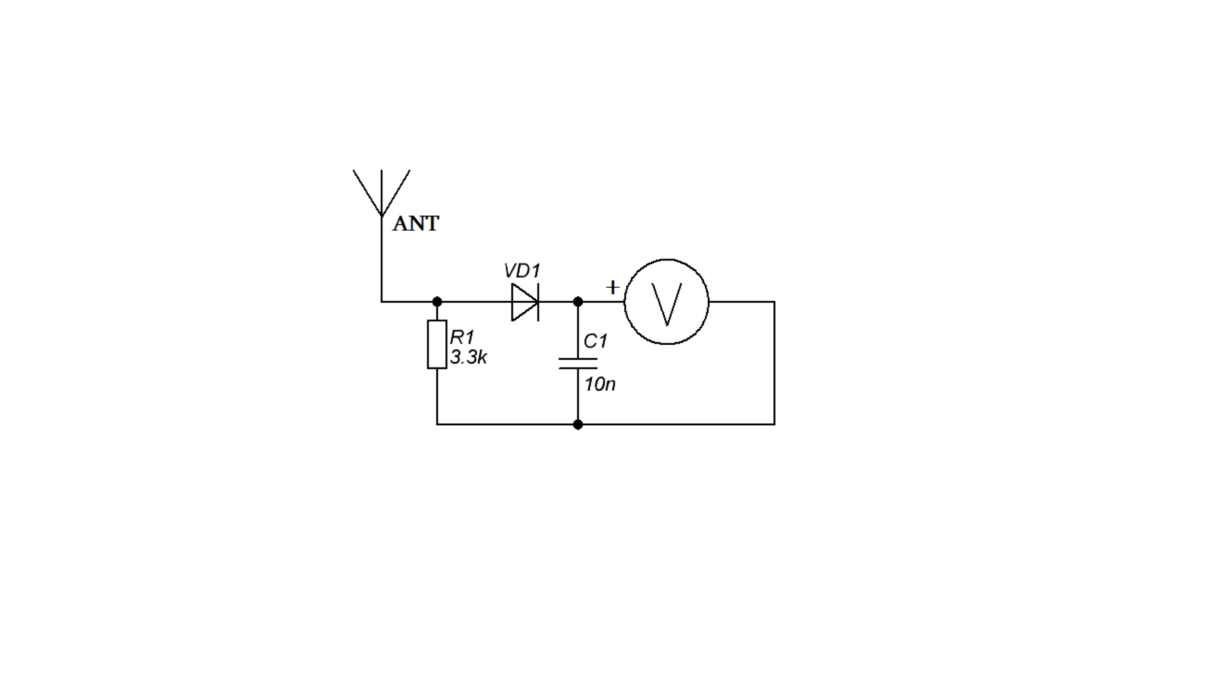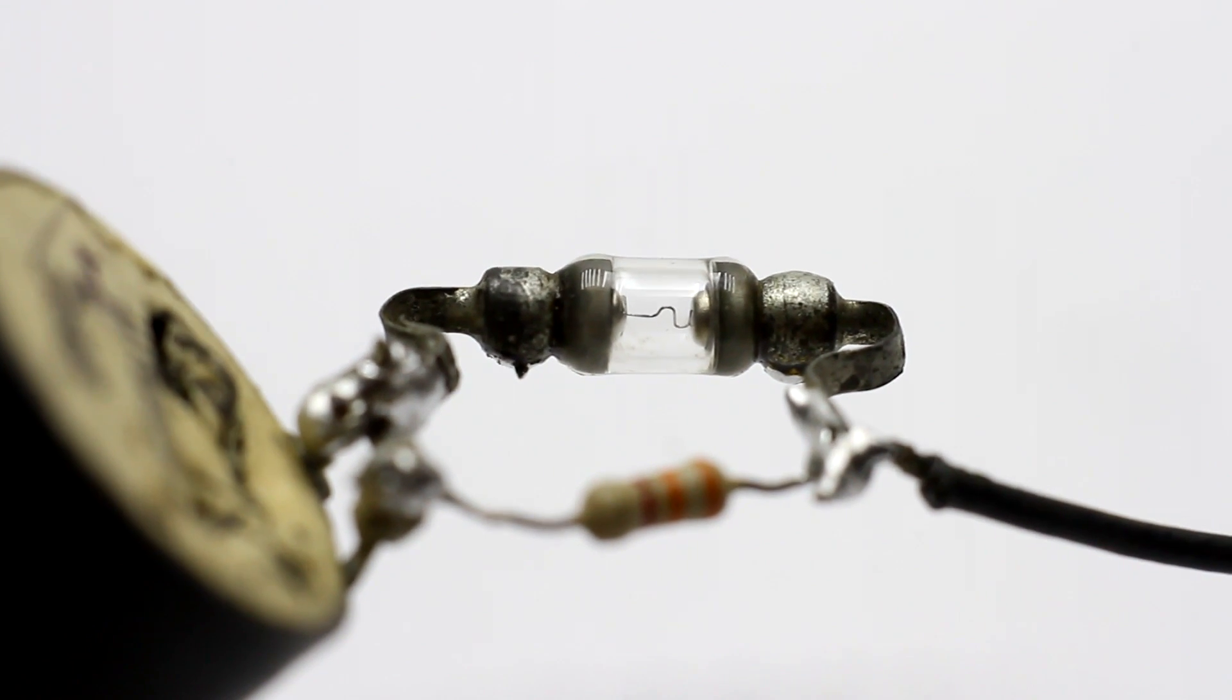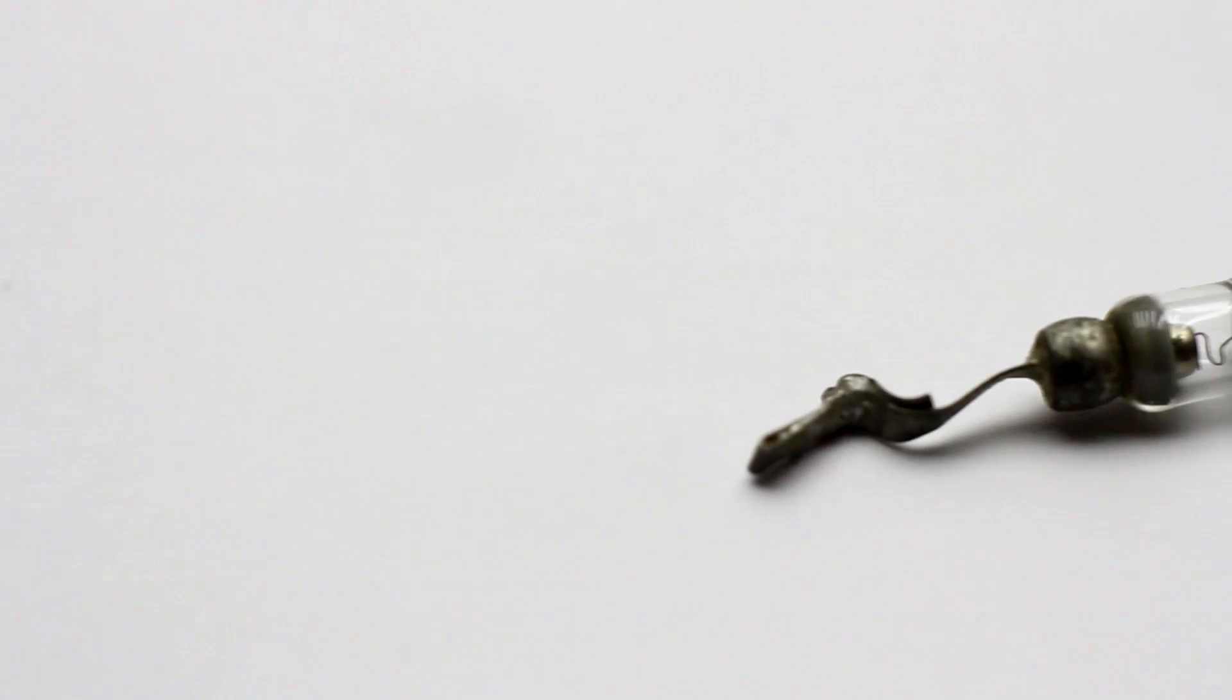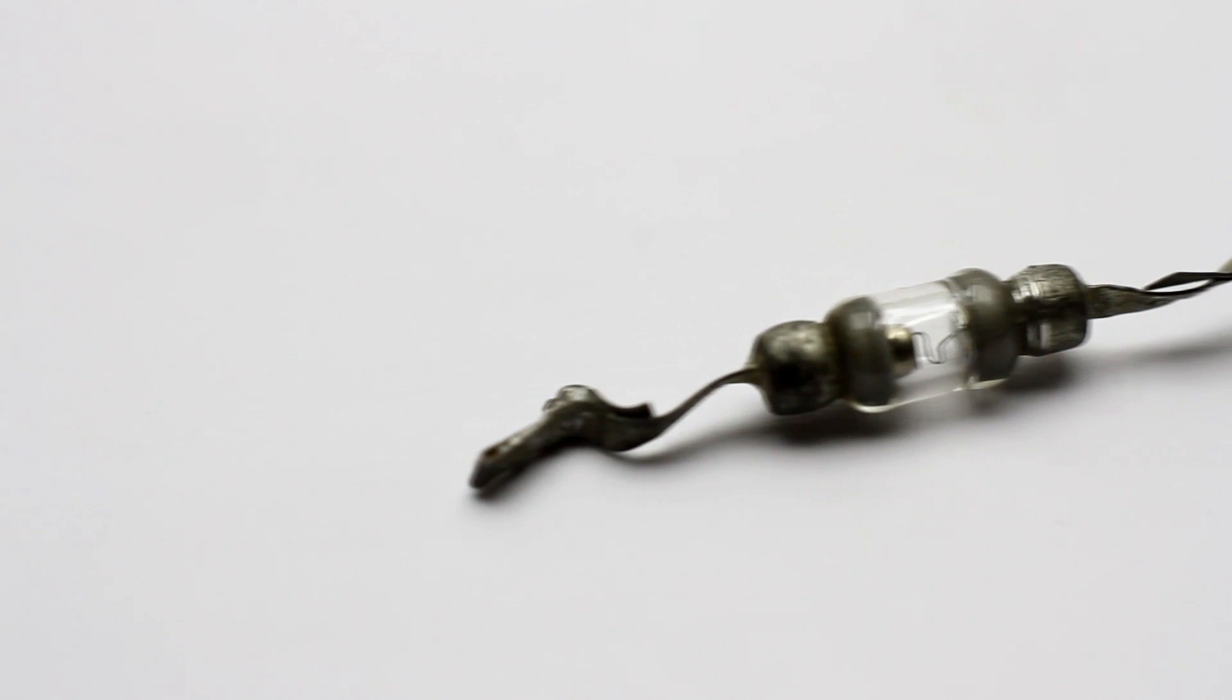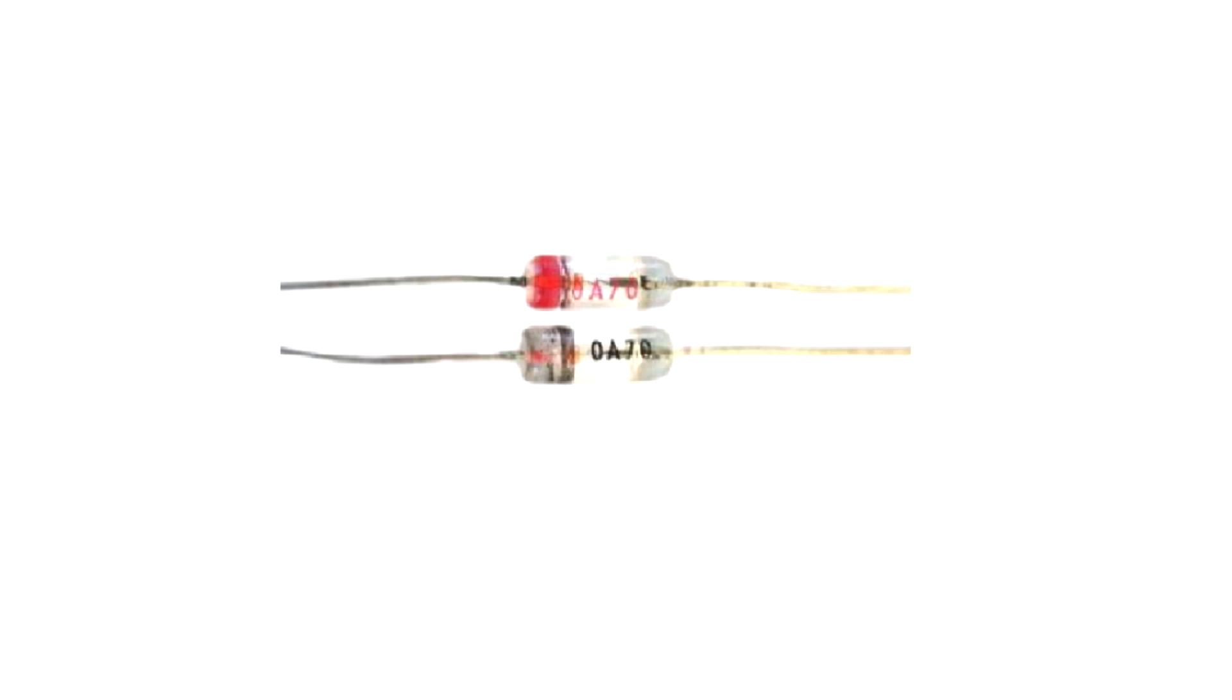The scheme is simple, easier to nowhere, a couple of details and the antenna. For a detector, diodes strongly advise to use the old-style germanium diodes. In the description is the document where there are listed some diodes suitable for these purposes. It is also possible to use the modern microwave diodes, although such is much more difficult to find.